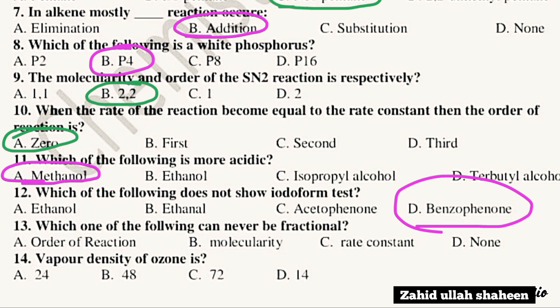Question 13: Which of the following can never be fractional? The answer is molecularity — it cannot be fractional. Question 14: The vapor density of ozone is 24.